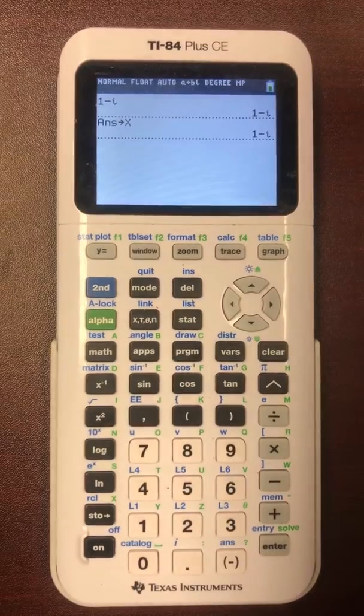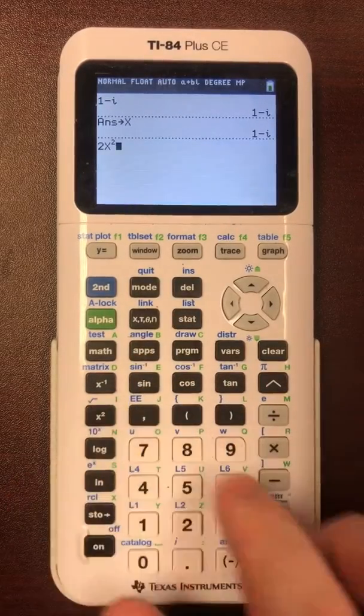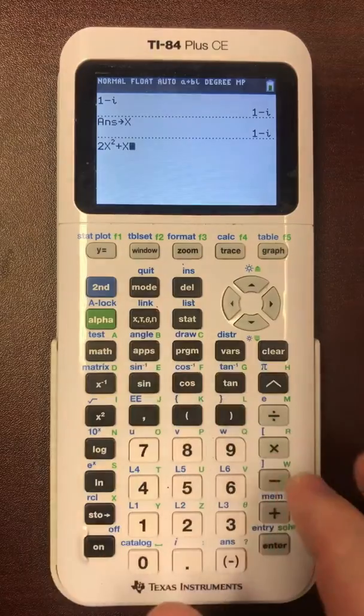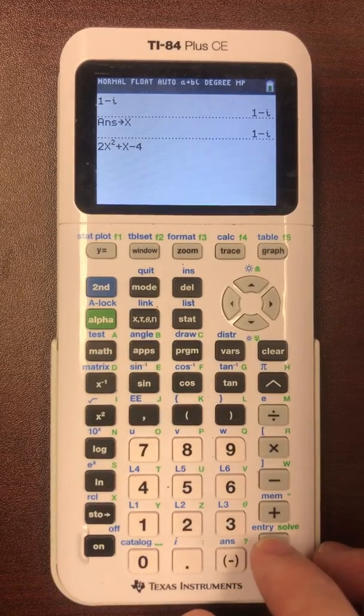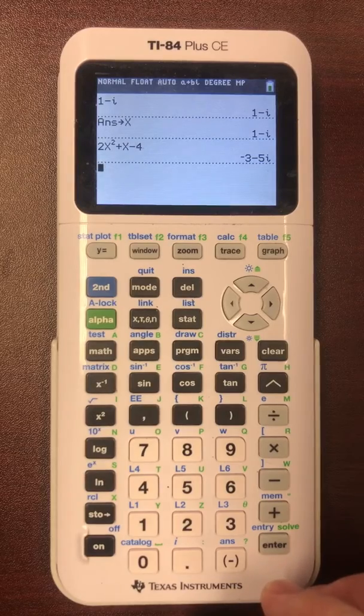For example, if you type in answer A, you get 2X squared plus X minus 4. Now this works, we just stored 1 minus I as X. That's clearly not zero.